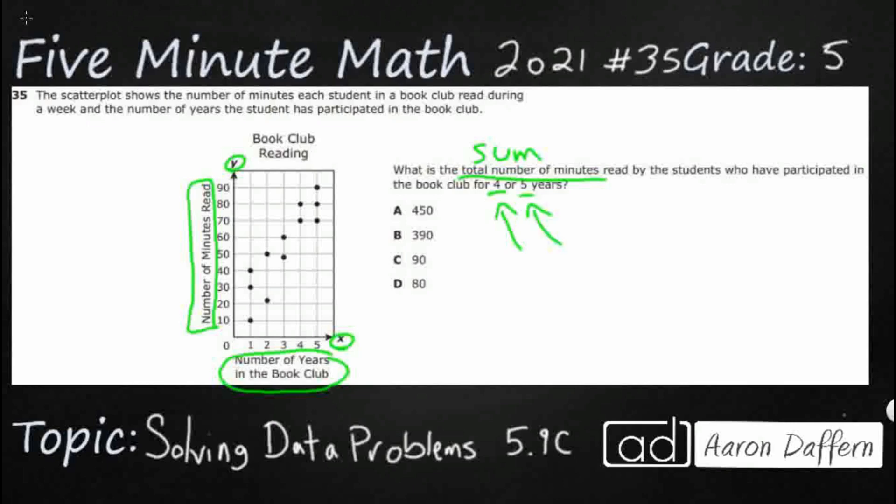And what looks like just a coordinate grid here, because that's really how the scatter plot works, you can see it's kind of messy because you have some overlapping numbers. So you've got some students that have read for 5 years, but they're going to be 70, 80, and 90. So really what we're wanting to do is pull the data off of this and then turn this into just a basic addition problem.